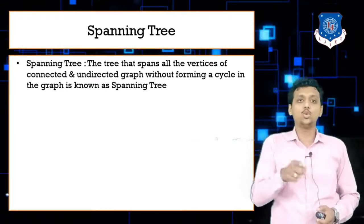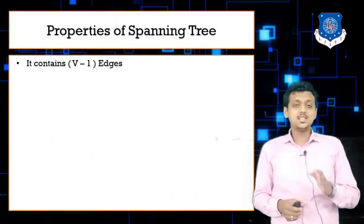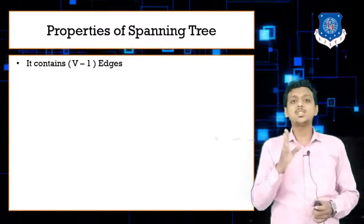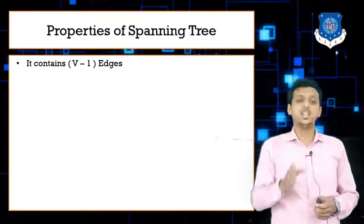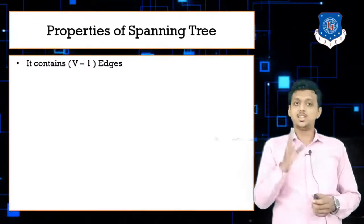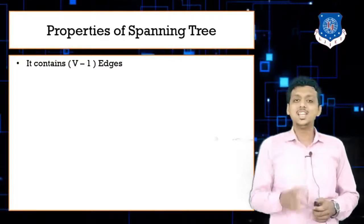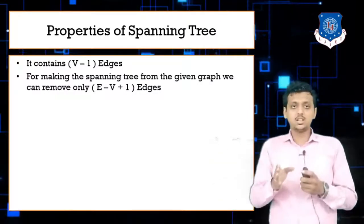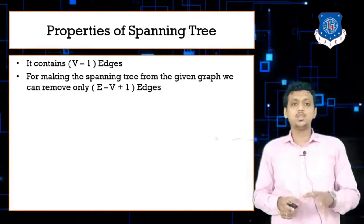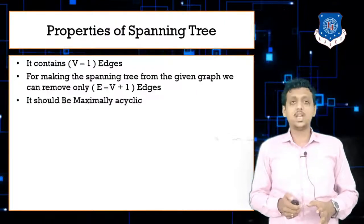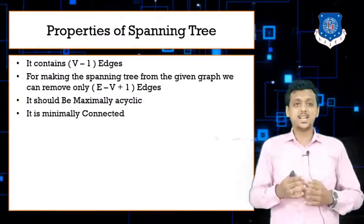Now the properties of the spanning tree. The very first property is that a spanning tree must contain V minus 1 edges. If a graph contains 9 vertices then the spanning tree contains 8 edges; if your graph contains 12 vertices then your spanning tree contains 11 edges. To make a spanning tree you need to remove E minus V plus 1 edges from a graph. A spanning tree is maximally acyclic — there is no cycle — and minimally connected, meaning all nodes are connected with minimum edges.